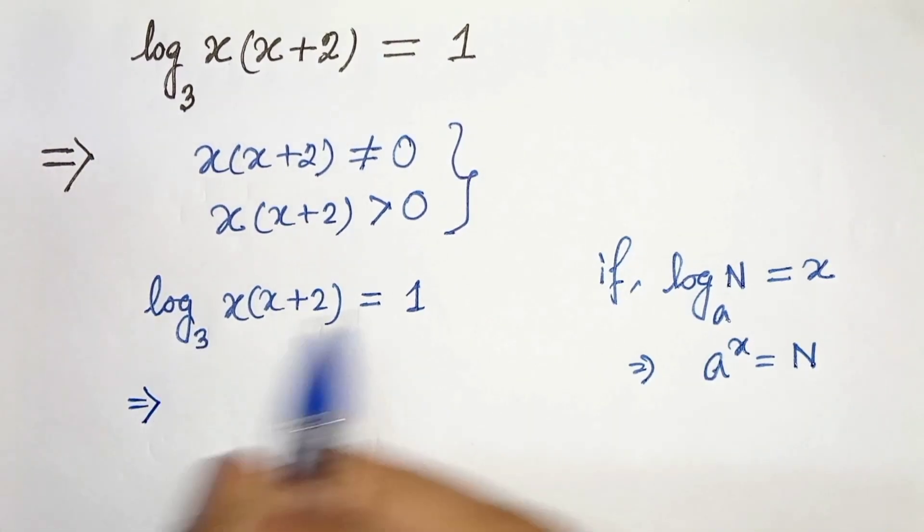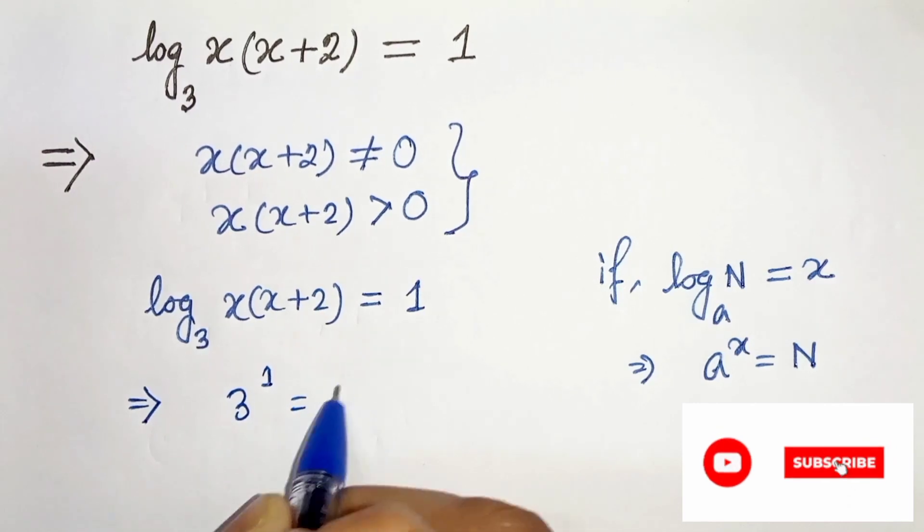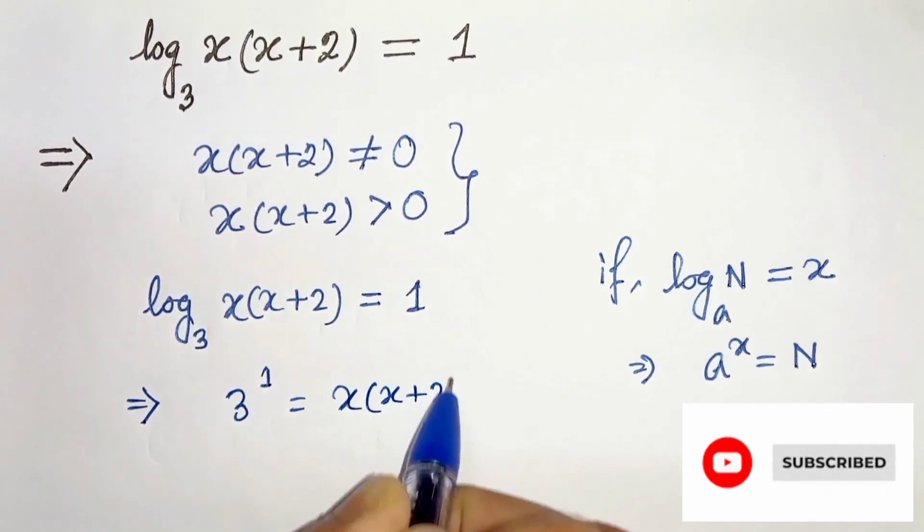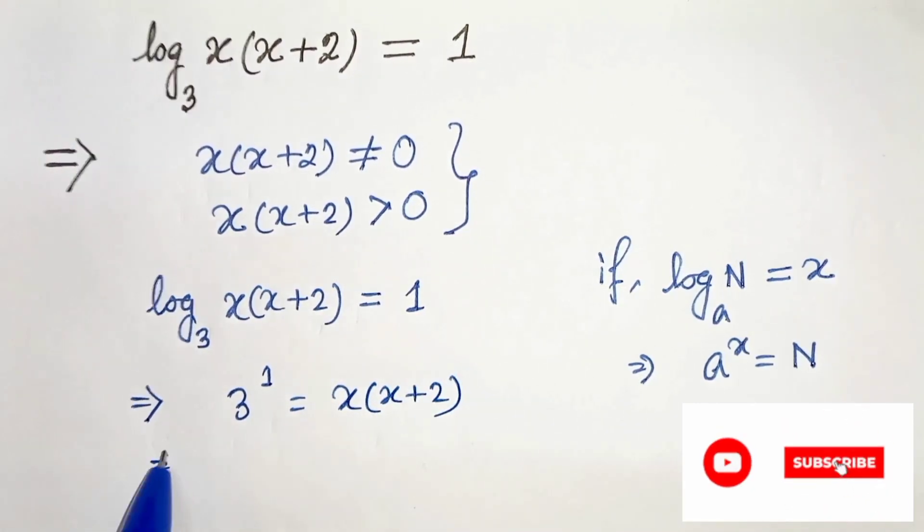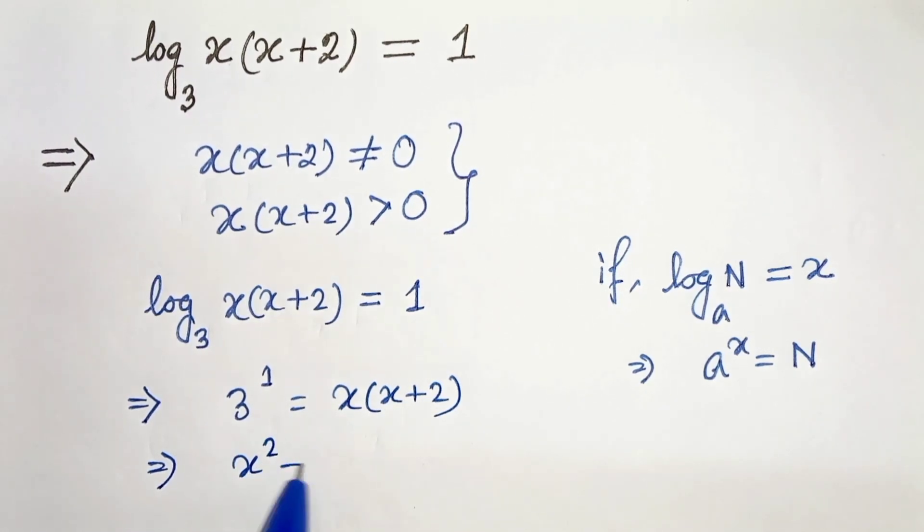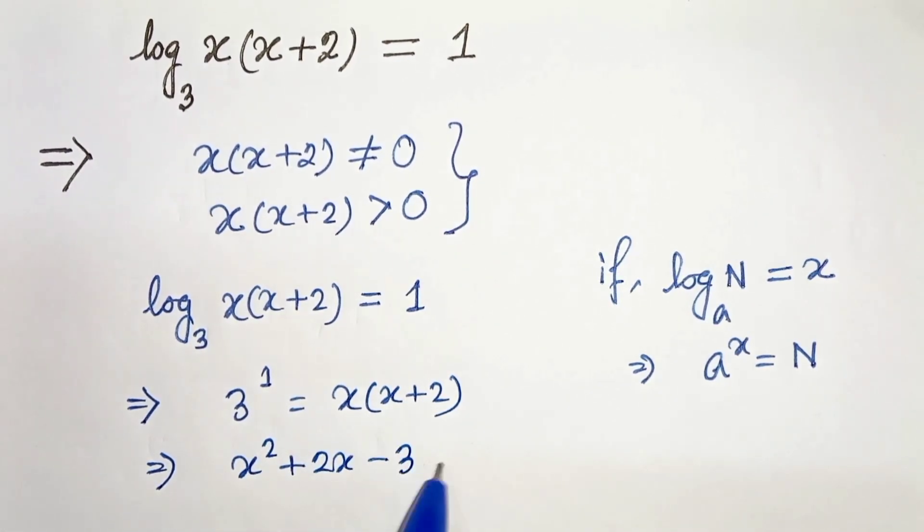So from this we can write 3 to the power 1 equals x times x plus 2. Therefore, from this we can write x squared plus 2x minus 3 equals 0.